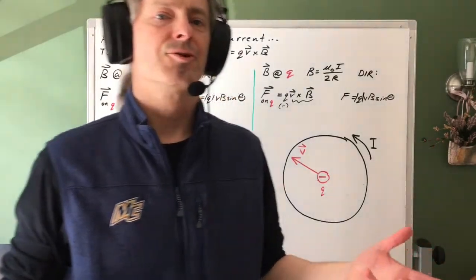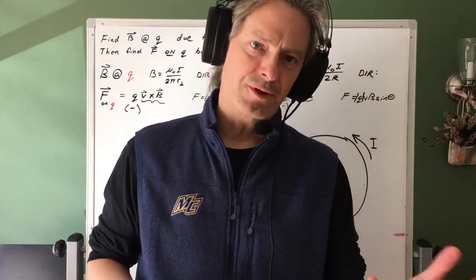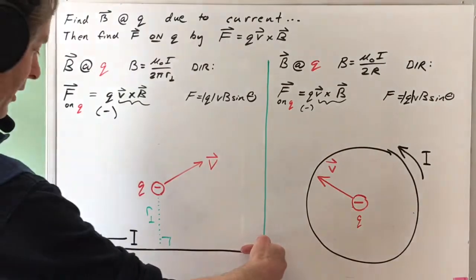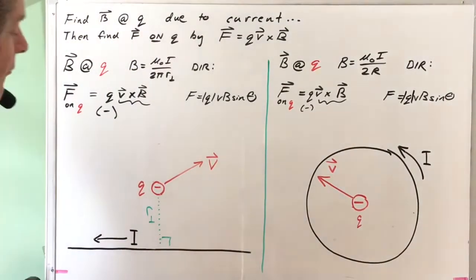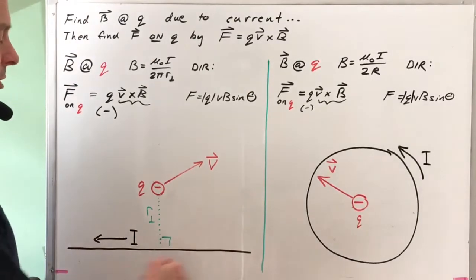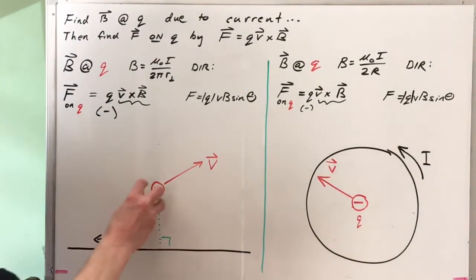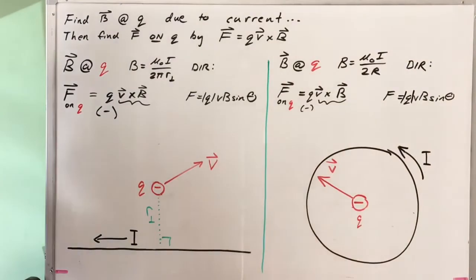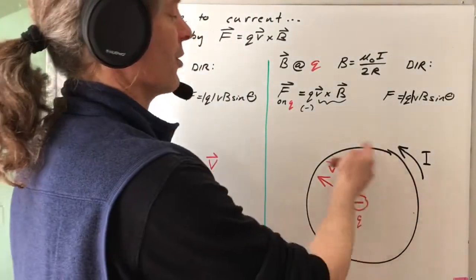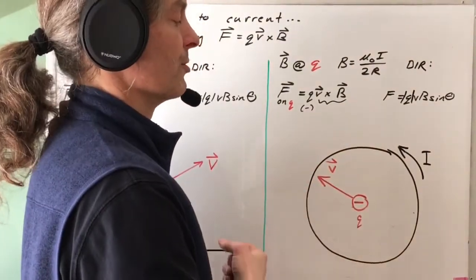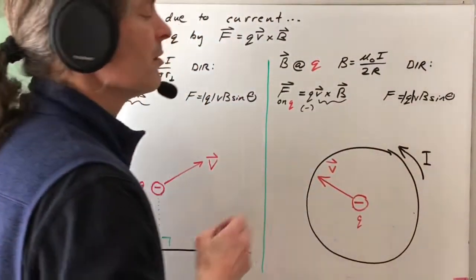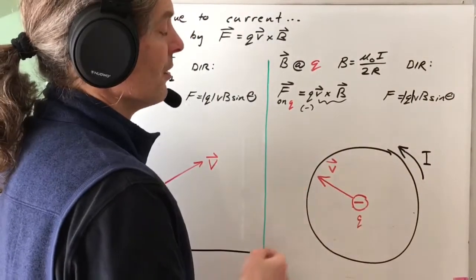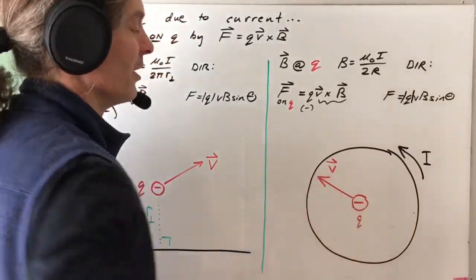In this video I have two practice problems involving both magnetic force and magnetic field. In the first problem I have a long current carrying wire with a current to the left. What I want you to figure out is the direction of the magnetic force that the magnetic field of this long current carrying wire would exert on a negative charge above the wire with a velocity in the indicated direction. In the second problem, it's similar except we have a current loop that's going to produce a magnetic field at the center of the loop. I want you to find the direction of the force that that magnetic field at the center of the loop produced by this current will exert on this negatively charged particle moving with the velocity in the indicated direction.